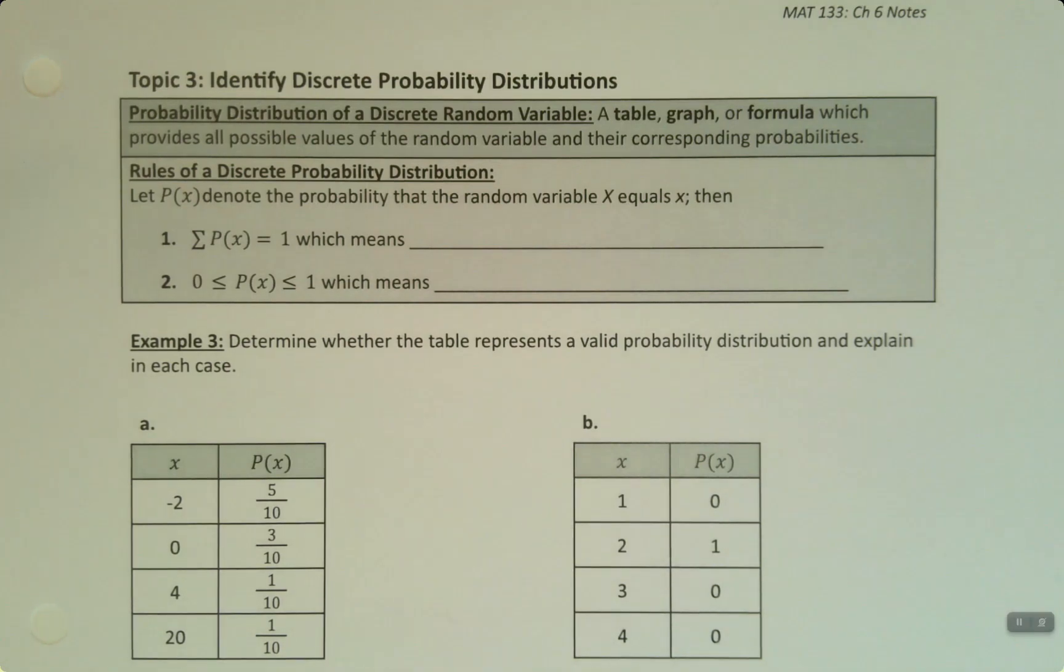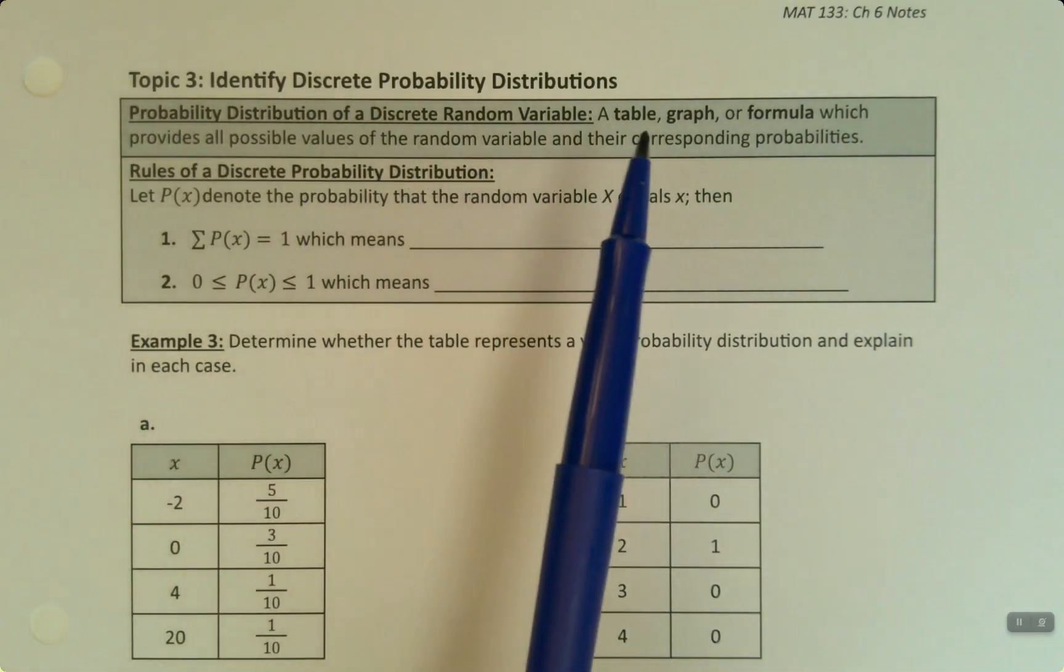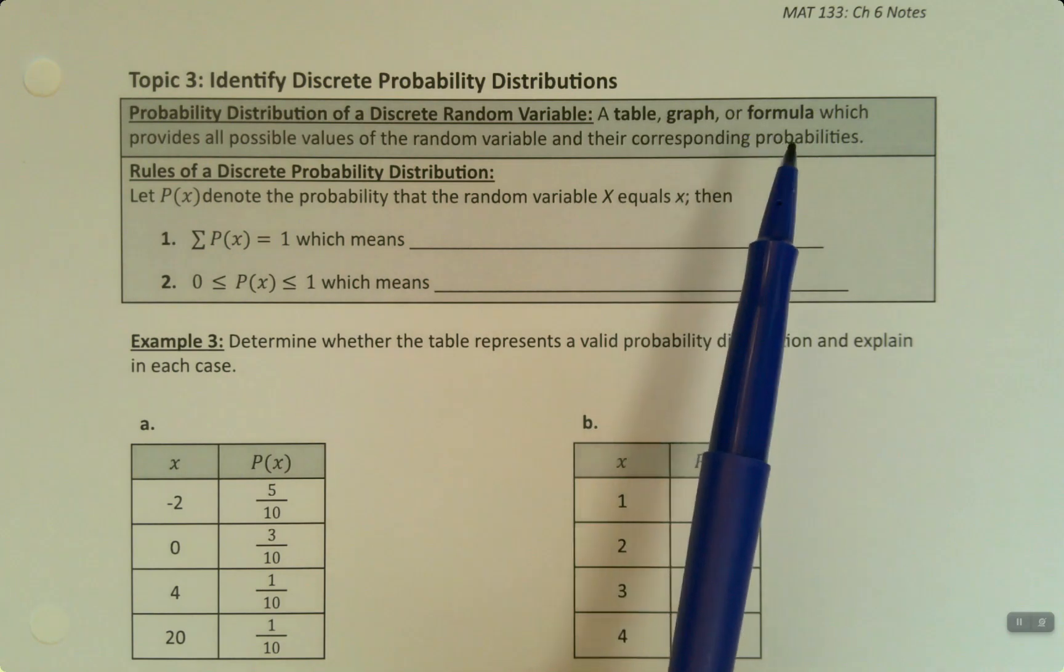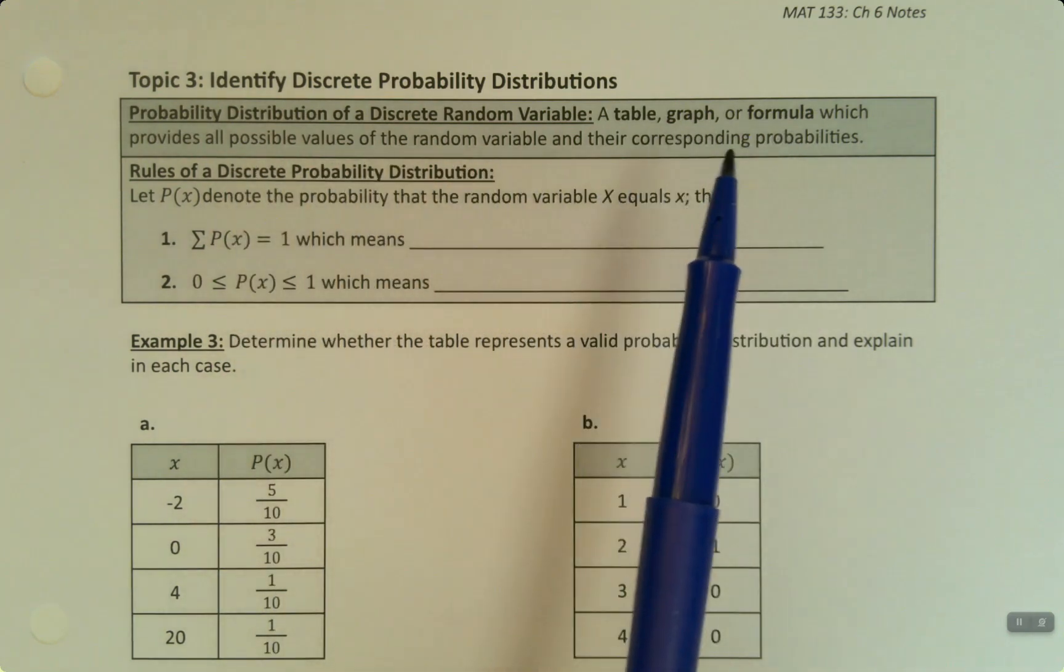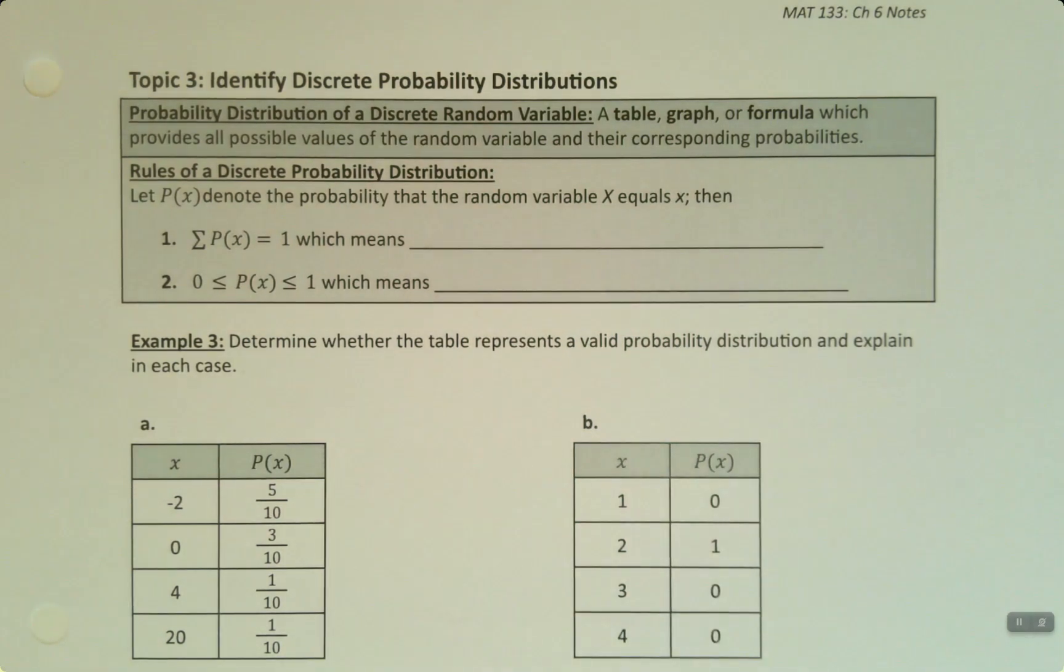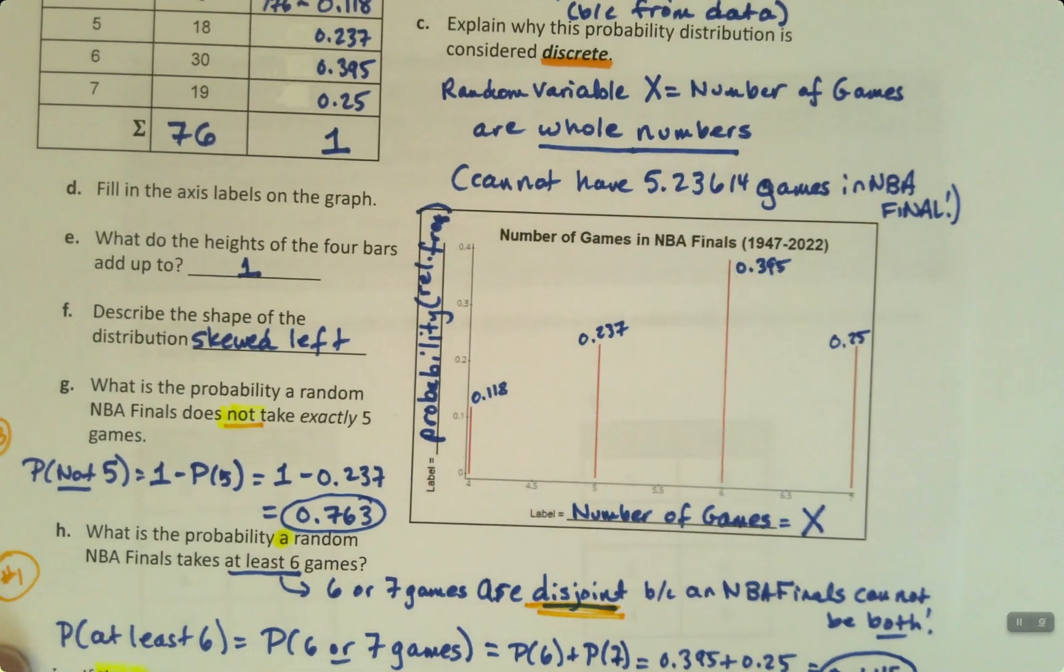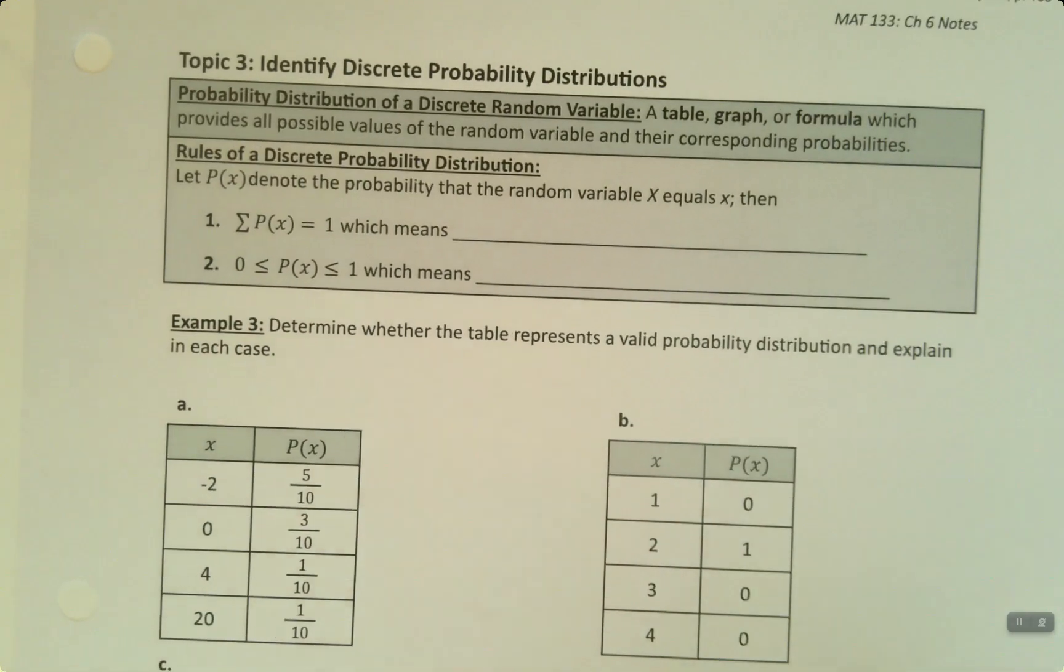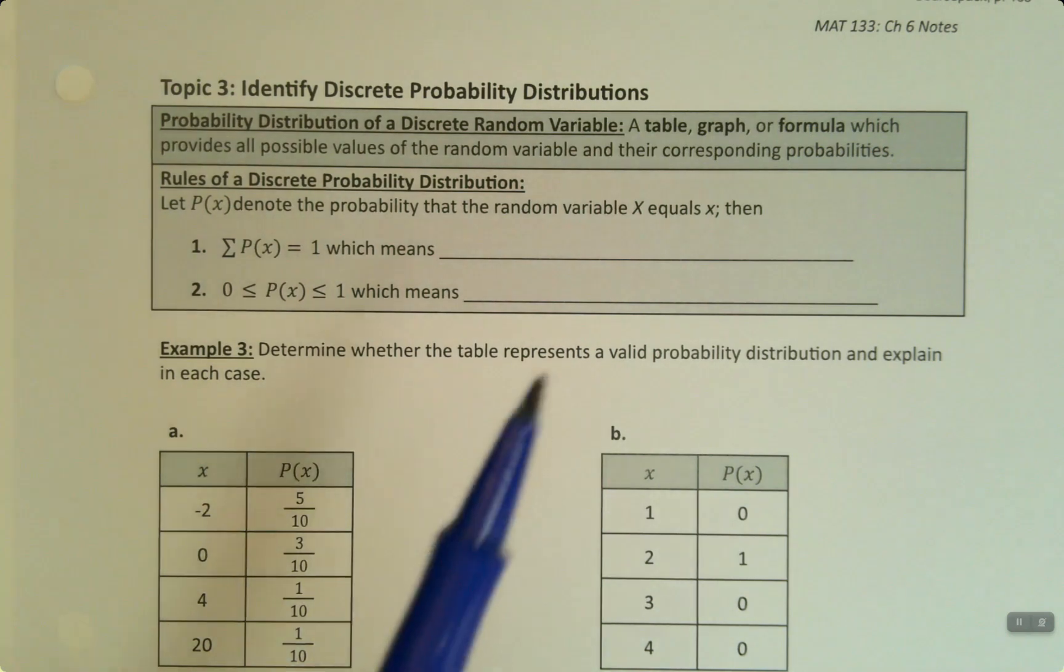So now let's learn how to identify a discrete probability distribution. Remember that a probability distribution of a discrete random variable is a table, graph, or formula which provides all the possible values of the random variable and their corresponding probabilities. We saw that on the previous page - we could give it to you in table form or graph form, and there are some that can be found with formulas that don't need tables or graphs. We'll see those in another section, 6.2.